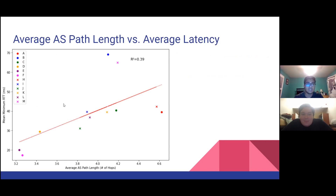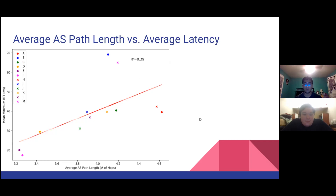Here we're looking at AS path length versus latency. What that essentially means is the number of hops that a traceroute request takes to arrive at a destination server, graphed against latency or ping time. What that reveals is a pretty good correlation — specifically, the R-squared is 0.39 in this scenario, and that's to be expected. When we have more hops, there are more points where BGP routing occurs, which takes the most time. Communication within a network is generally faster than communication between networks, and that's one of the bottlenecks we face when discussing how to improve Anycast performance.